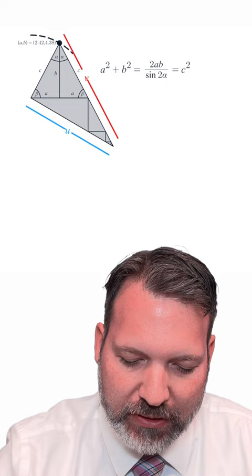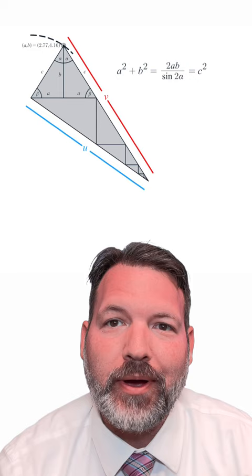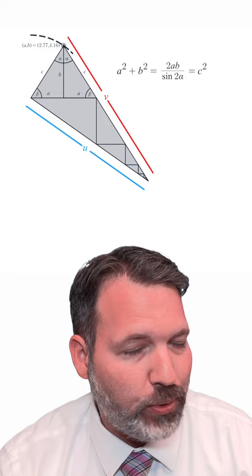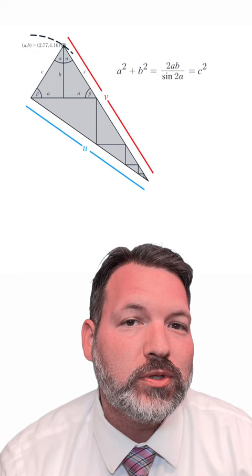The waffle cone along with your basic definition for the sine ratio and then something called the law of sines is what they used to prove the Pythagorean theorem. And this is pretty impressive because up until a little over a decade ago, it wasn't really thought that you could use trigonometry to prove the Pythagorean theorem.